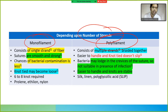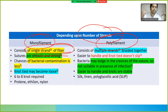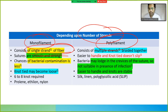Monofilament consists of a single strand of fiber. Sutures are smooth and strong, and chances of bacterial contamination are less. However, the knot may become loose, so six to eight knots are required. Examples of monofilament sutures are Prolene, Ethylon, and nylon.